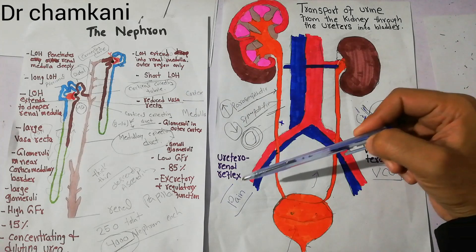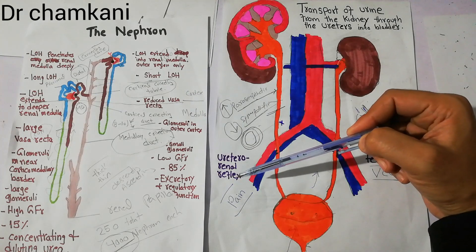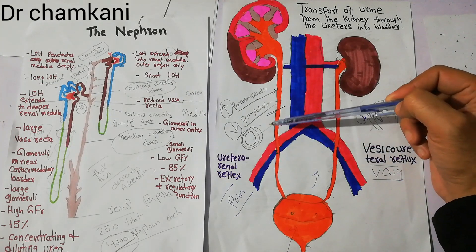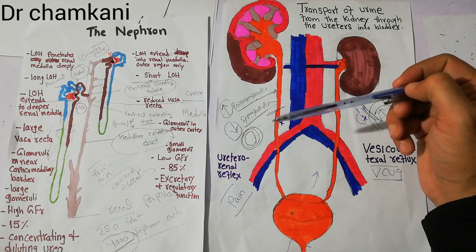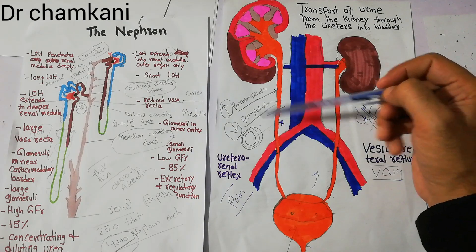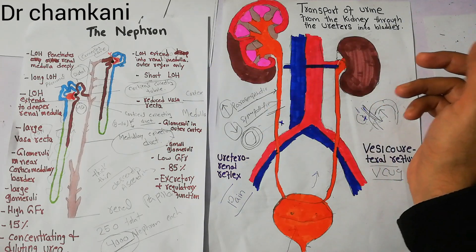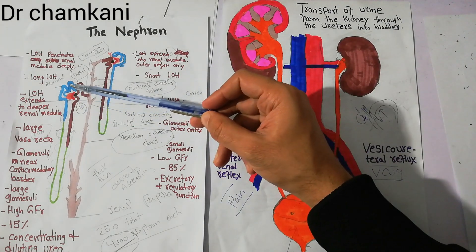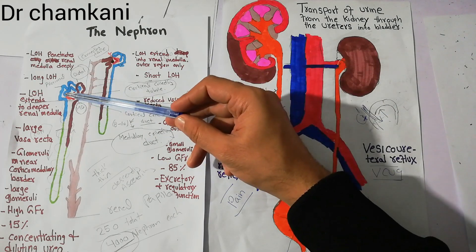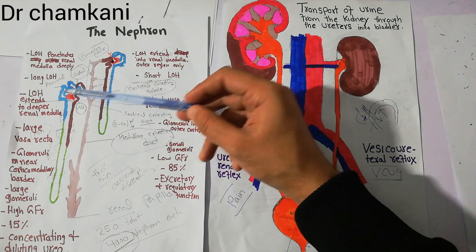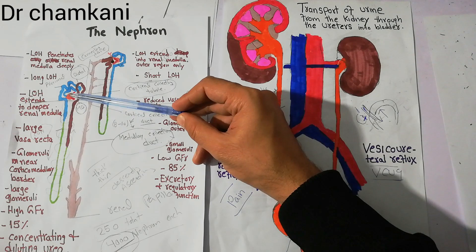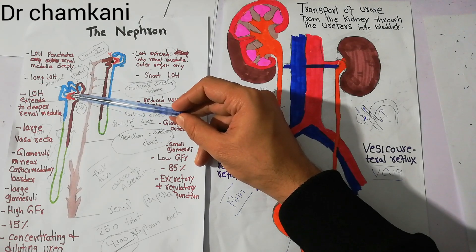When the ureterorenal reflex occurs due to obstruction in the ureter and intense constriction, arteriolar constriction occurs, blood flow to the kidneys and glomeruli decreases, so there is less filtration.